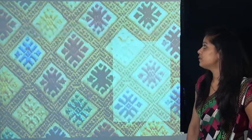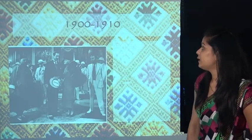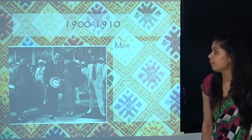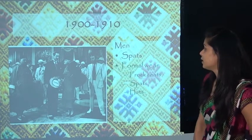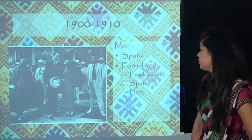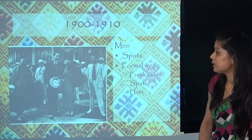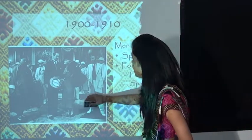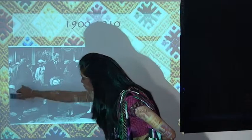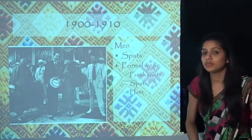Next is fashion in 1910 for men. Key items included spats, formal wear, frock coats, and hats. We can see in this image a frock coat that is white from the bottom, and a printed hat was also in style.